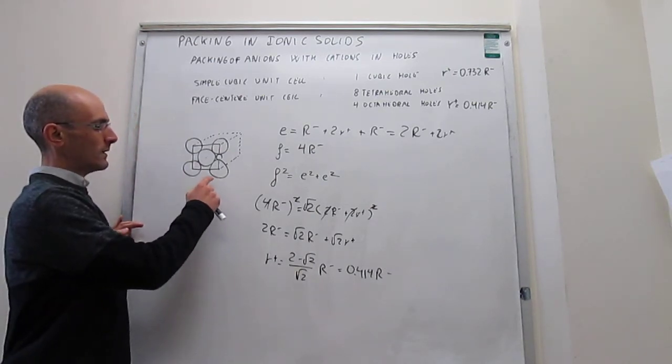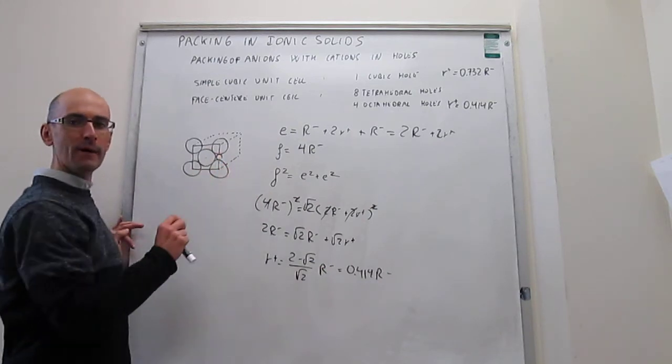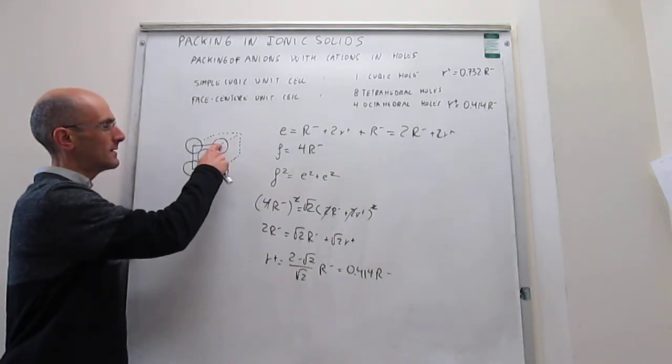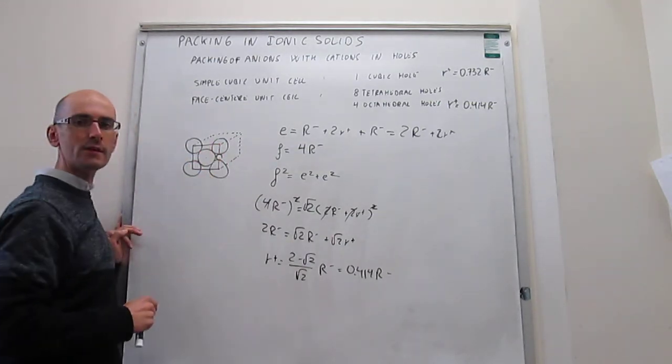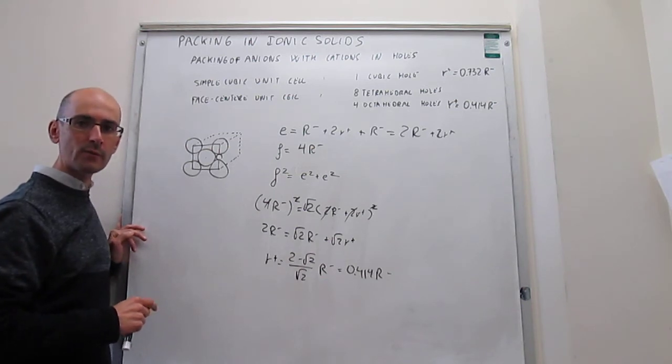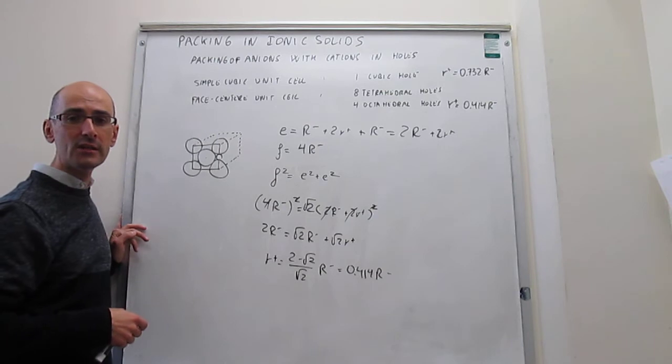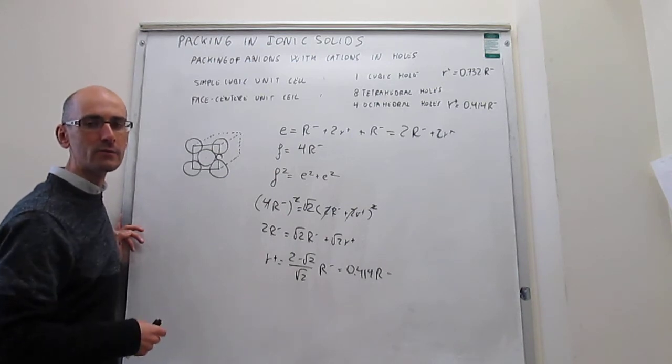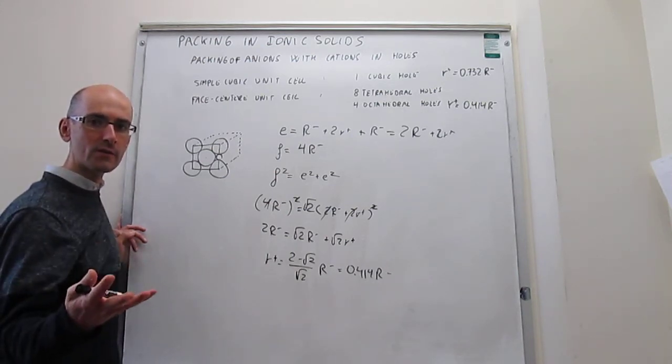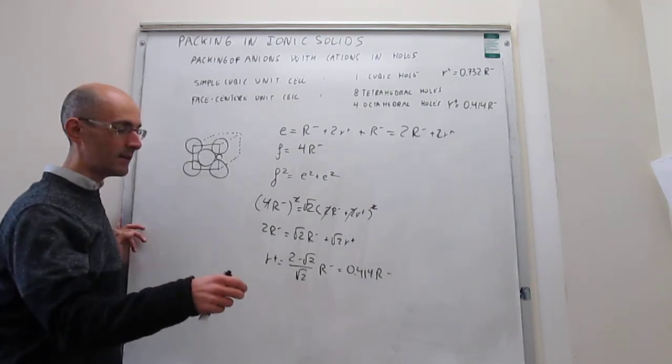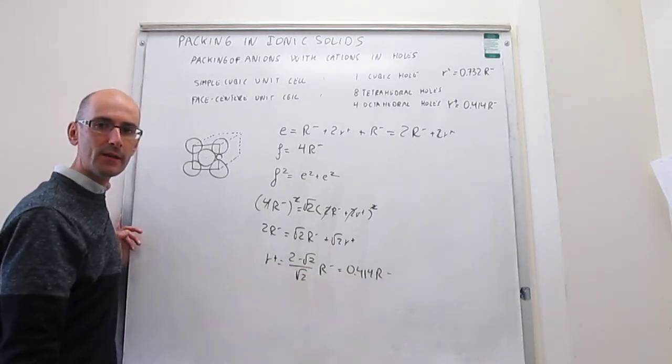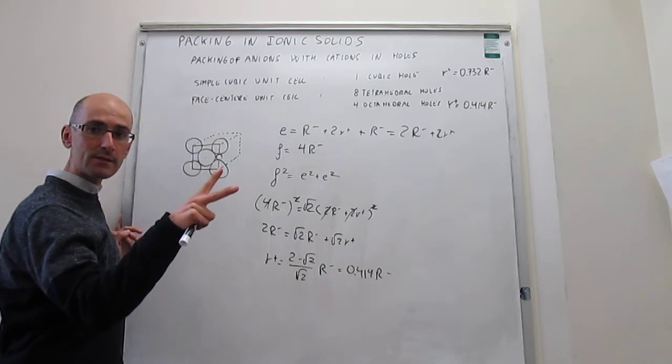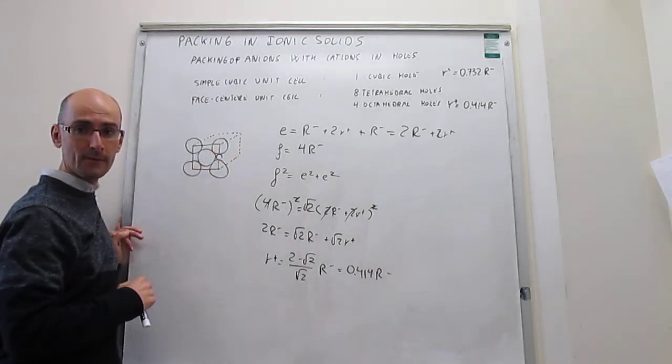Now, a problem with this packing would be that this number would give you the tightest fit possible. But in that situation, what you would have is that these anions that you have here in the face would actually be touching with each other. And of course, because they are all negatively charged, that would lead to a lot of electrostatic repulsion. So the idea is that this is going to be a limiting value, such that if in the crystal structure that you are trying to resolve you find that the radius of the cation is larger than this number, then you will have this type of crystal structure, but it would be expanded such that the anions don't touch directly.